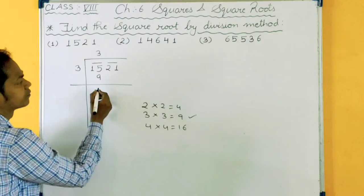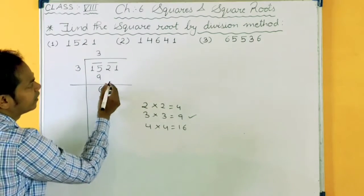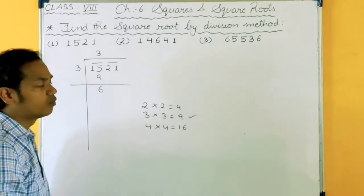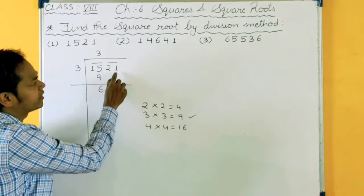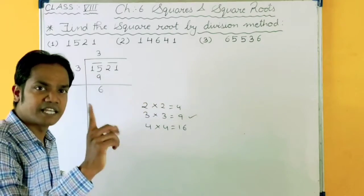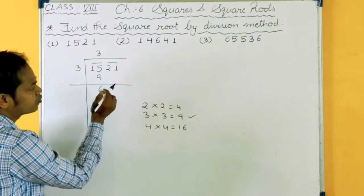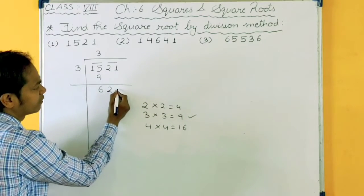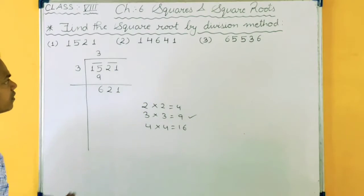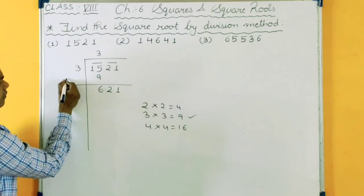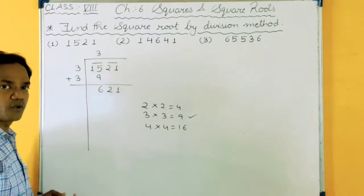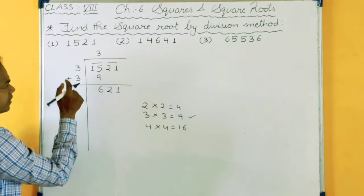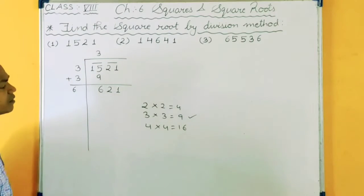Now subtract it. 15 minus 9 equals 6. In division what you do? You take single digit. But here we will take single pair. So this 21 will come together. Now this 3 will plus here. This is the process, this is the method. 3 plus 3, 6.